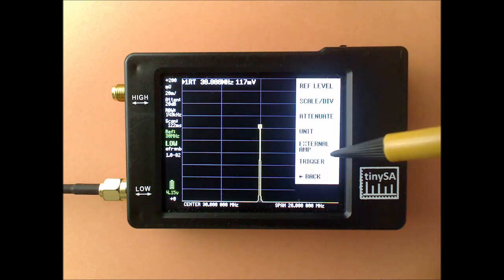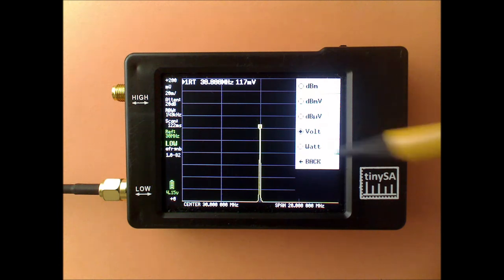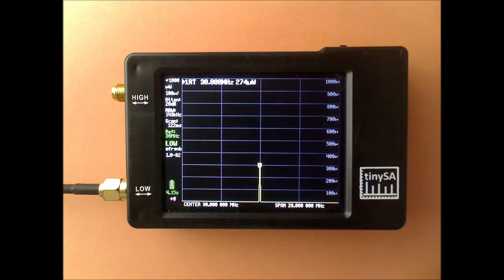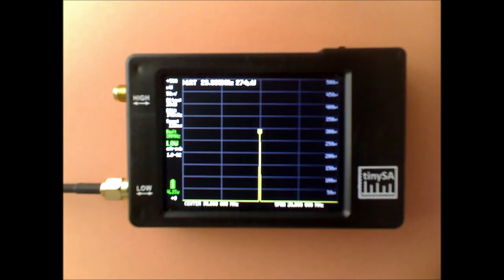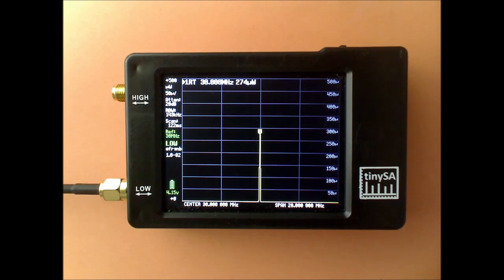Also in the watt unit you don't see the noise, but you can immediately see that my signal generator is producing around 300 microwatt.